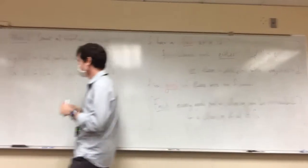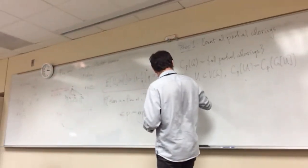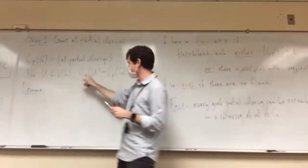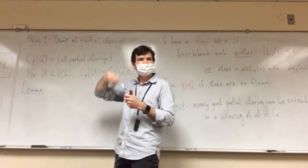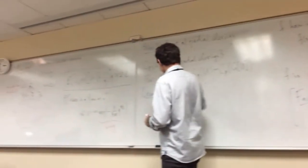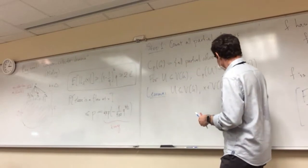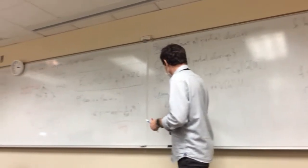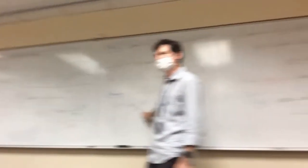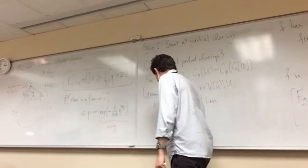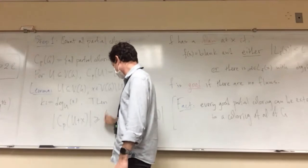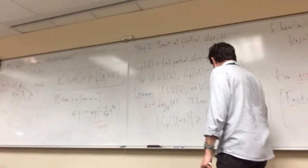The key lemma is to understand how the size of this set changes as we add vertices to U one by one. So we have U a subset of vertices and a vertex x not in U, and k is the number of neighbors x has in U. Then |C_p(U ∪ {x})| is at least |C_p(U)| times (1 - 1/q)^k times q. If we apply this repeatedly, starting with U empty and adding vertices one by one, we get exactly the formula we want.